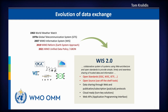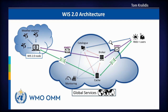The architecture illustrates the concept of global services: a global data catalogue, global data broker, and global cache feeding data to users. Feeding into the global services, we have a series of WIS2 nodes, which are essentially the national weather services collecting data from their weather stations and converting it to the required data formats. When data are ready, notifications go through the global broker, and users can get data directly from the WIS2 node or from the global cache. It's all event-driven.